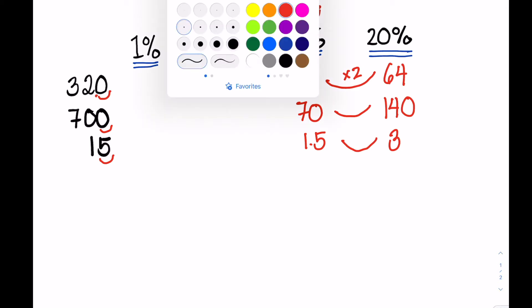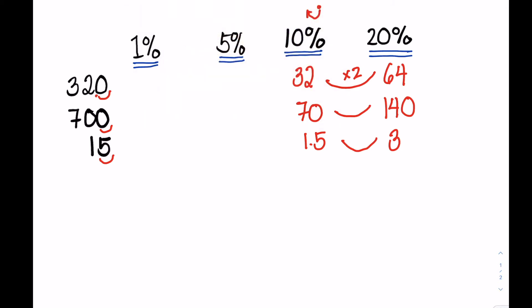Now to get the 5%, we divide the 10% by 2. So we have 32 divided by 2, we have 16. And then 70 divided by 2, we have 35. And for 15, 1.5 divided by 2 is 0.75.